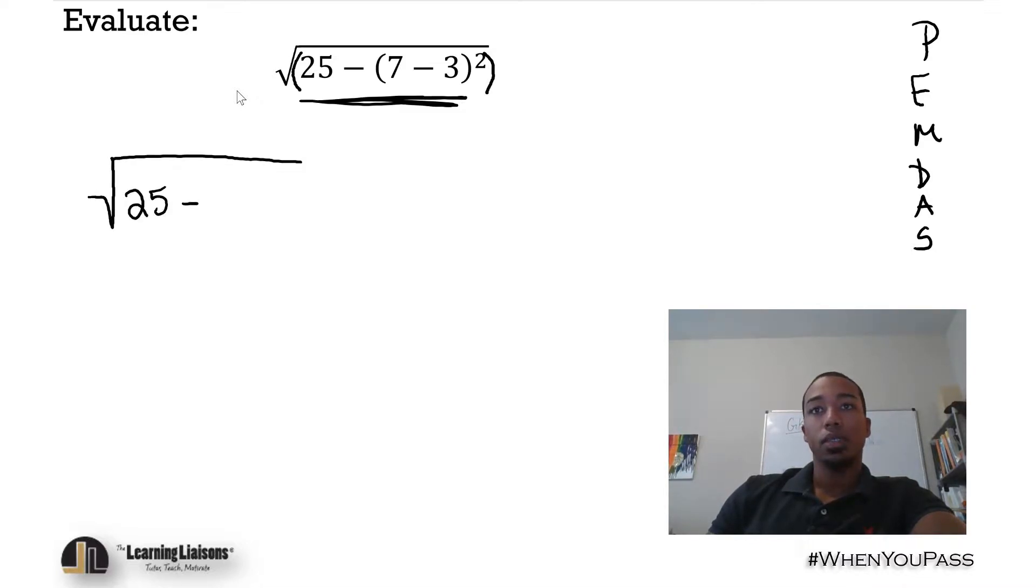What's 4 squared? That'll be 16. And so 25 minus 16, that will be 9.